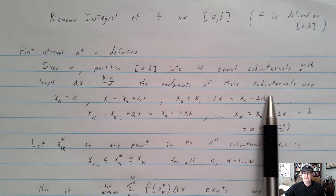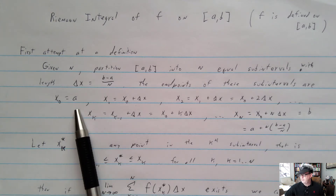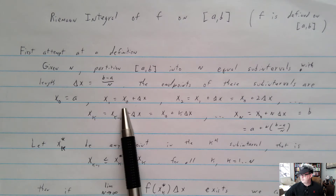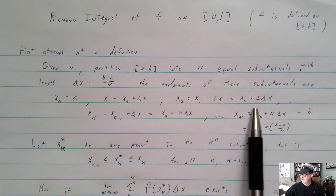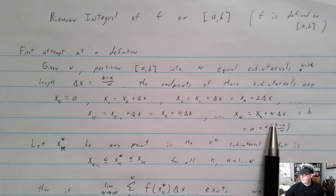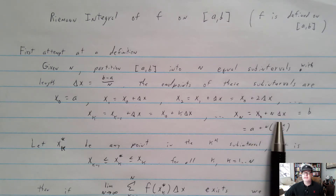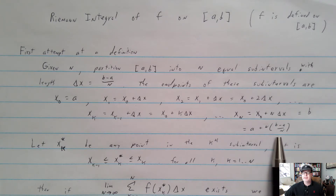The endpoints of those subintervals: there are actually n + 1 endpoints, starting with x₀ = a. Then x₁ is just Δx more, and you keep adding Δx until you reach b. So xₙ = x₀ + n·Δx, where x₀ = a and Δx = (b − a)/n, so of course we'll be at b.